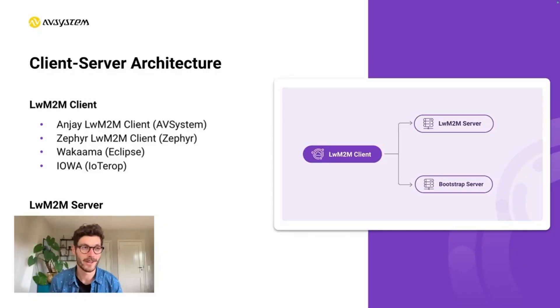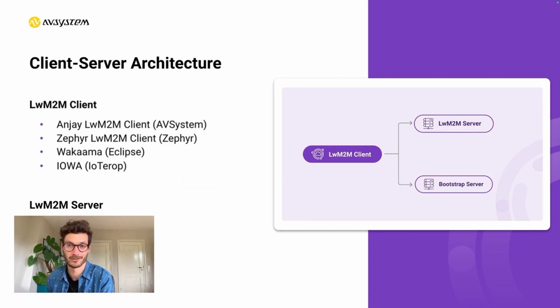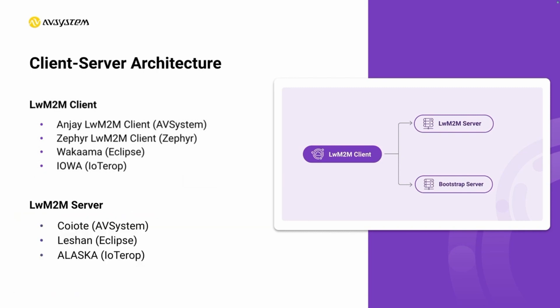Let's cover a few basic elements of the Lightweight M2M specifications, starting with the architecture, which is actually rather simple. It basically contains two separate components: the client, which runs on the end device, and the server, which runs in the cloud. There are different implementations available today, a couple of open source ones like NJ, Zephyr, Akama, and also a proprietary one from IoT.